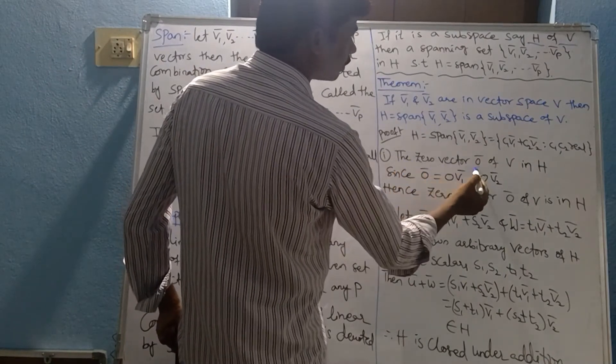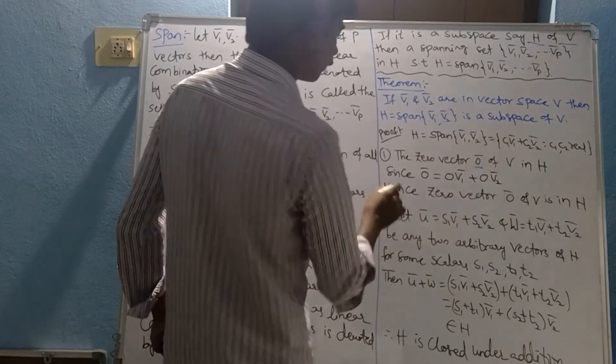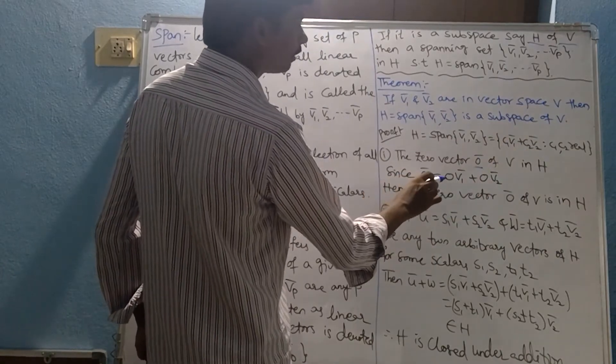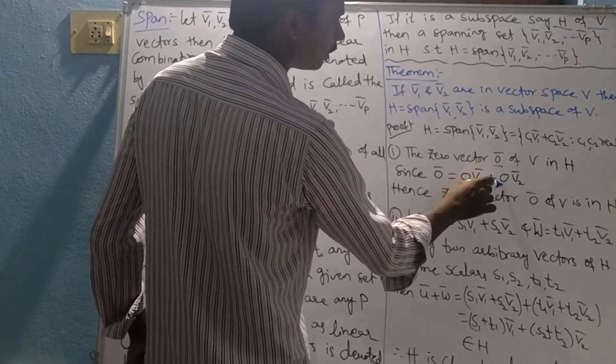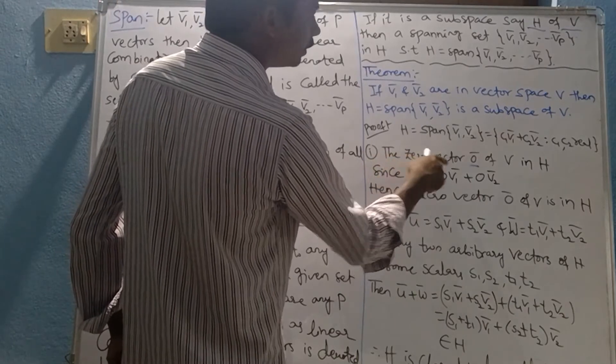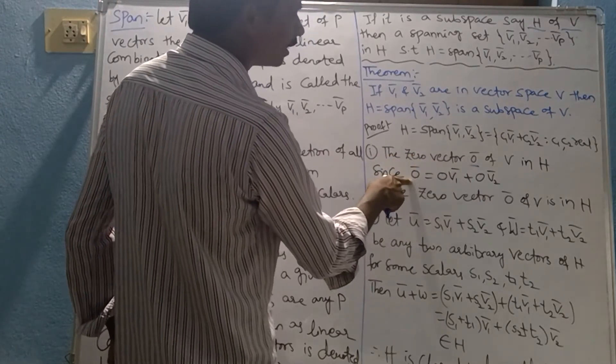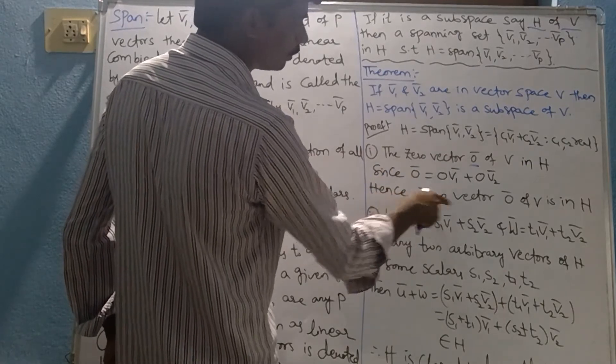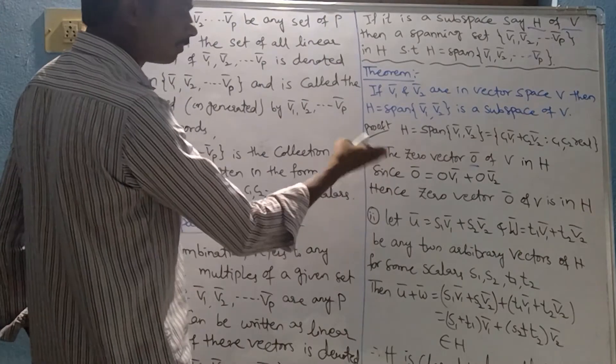Property number 1: The zero vector 0 bar of V is in H. This is a subspace, right? Since 0 bar equals 0, now C1 is replaced here with 0 and C2 also replaced here with 0. Then this is the zero vector. Sum of the zero vectors gives us 0. Hence, the zero vector 0 bar of V is in H. Property number 1 is completed.